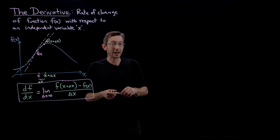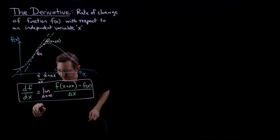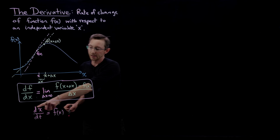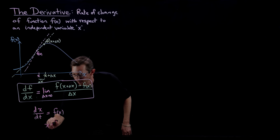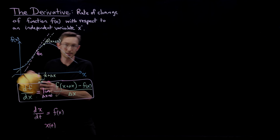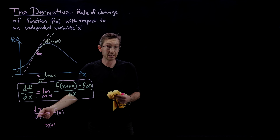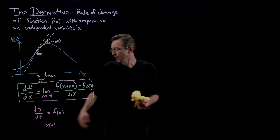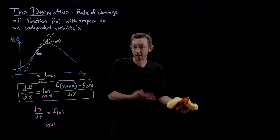A lot of my emphasis in this class is thinking about differential equations — something like: I have some state of a system X, and I take its derivative with respect to time, and maybe that's some function of X. So I need to approximate and understand this derivative. Here X is my function and T is my independent variable. For example, X might be the position with respect to time, and if I take the derivative of that position with respect to time, that's physically the velocity.